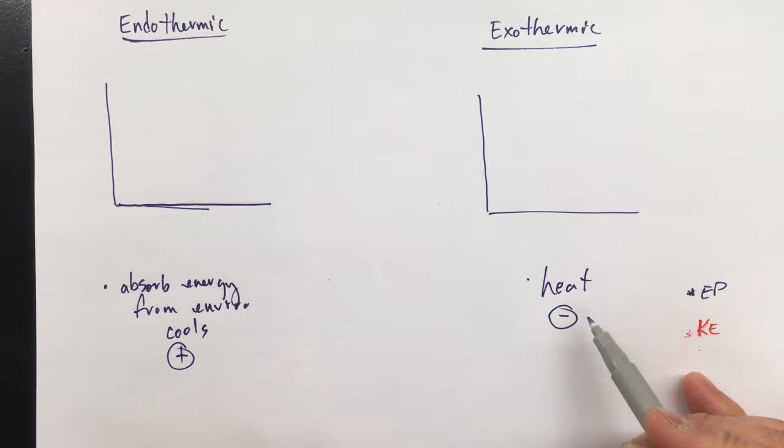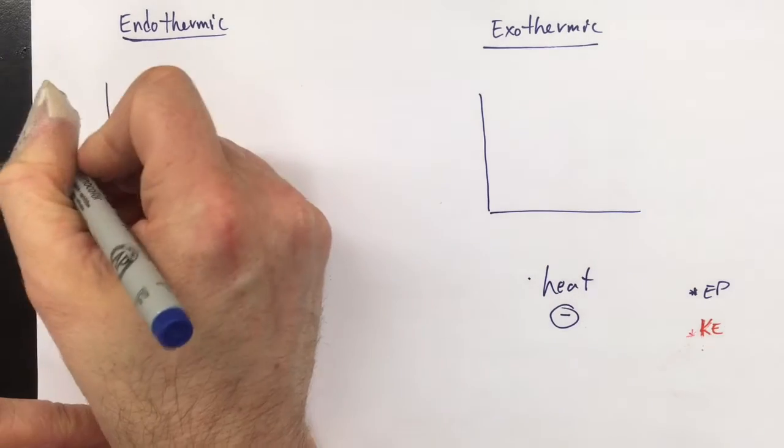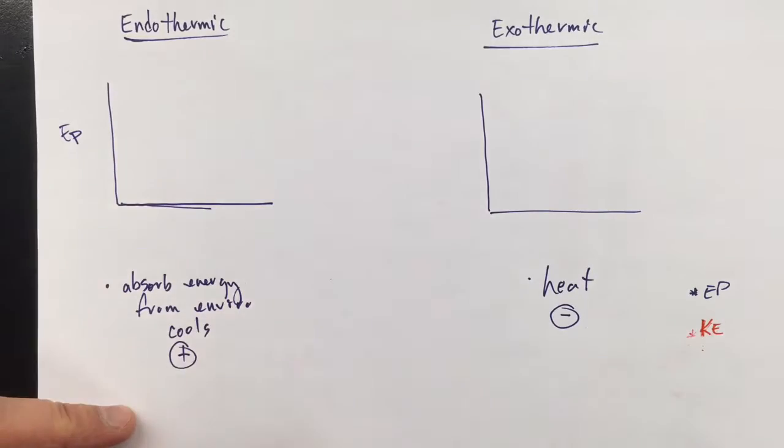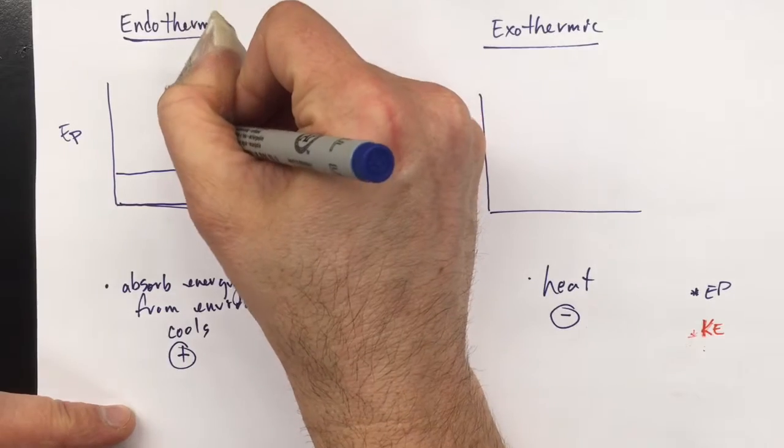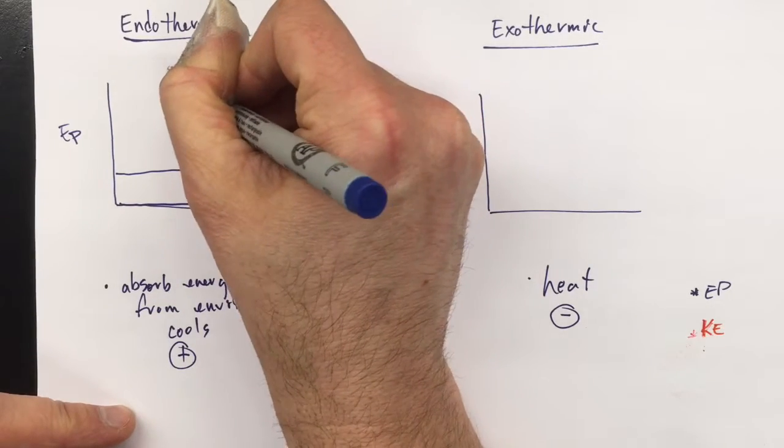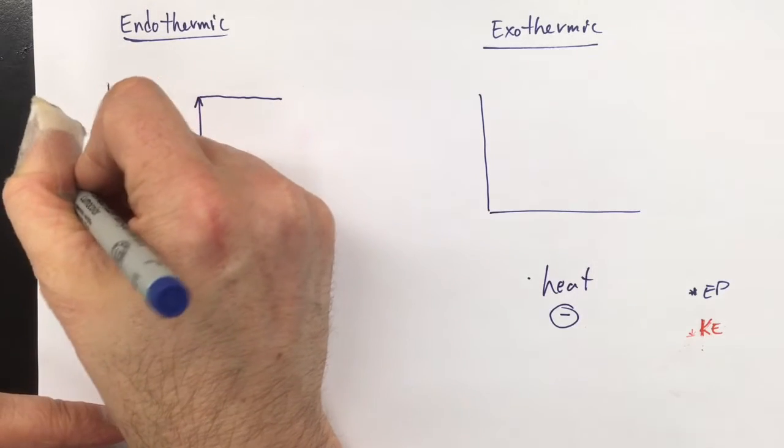If it heats the environment up, we're using up less energy to break bonds than make bonds. Endothermic reactions, if we're talking about the potential energy, the potential energy of the reactants are going to change to be higher potential energy, or more bond energy.